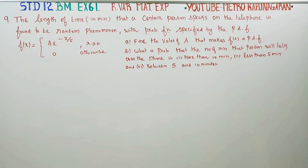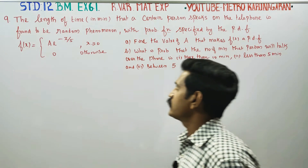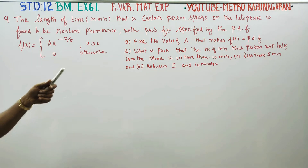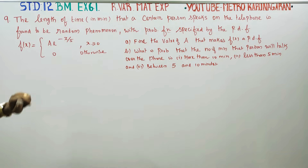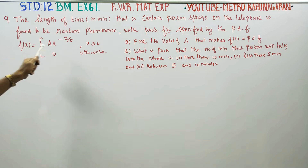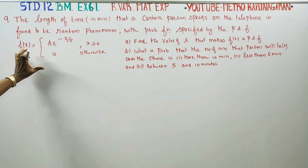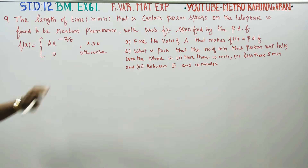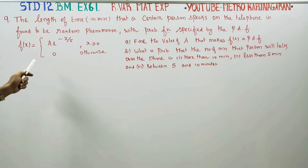Dear 12th standard business math students, this is exercise 6.1, sum number 9. The length of time that a certain person speaks on a telephone is found to be a random variable. Find the value of 'a' such that f(x) is a probability density function.